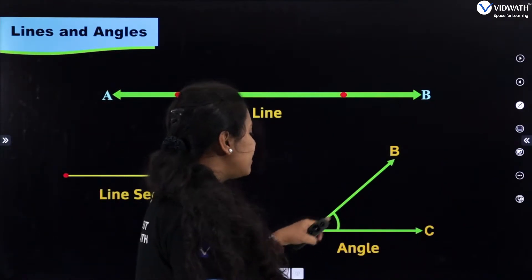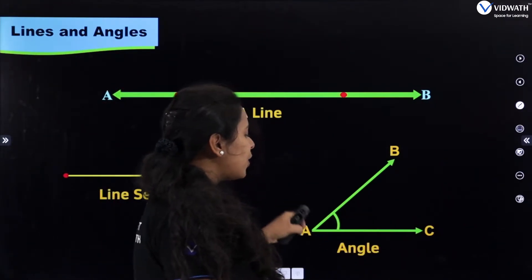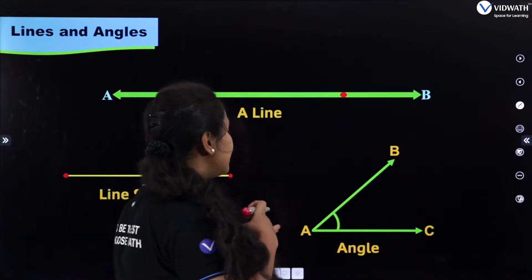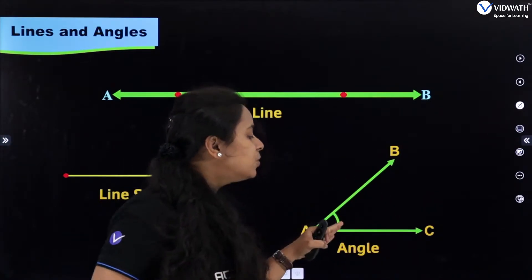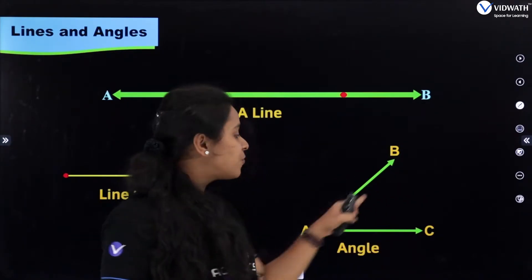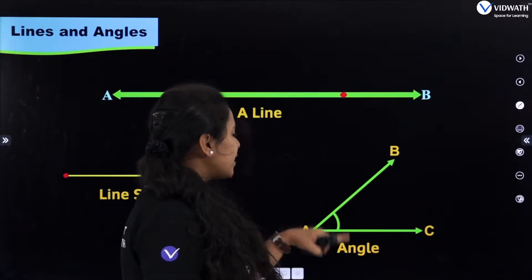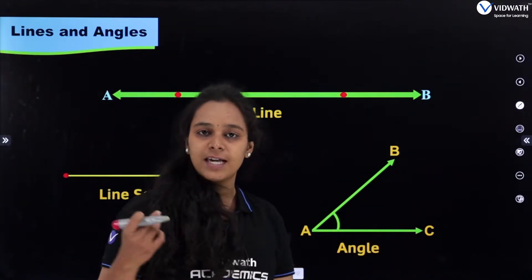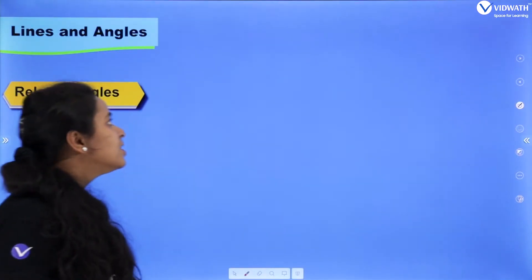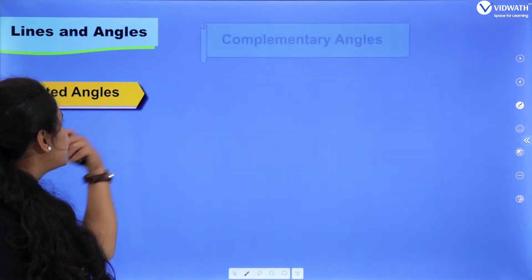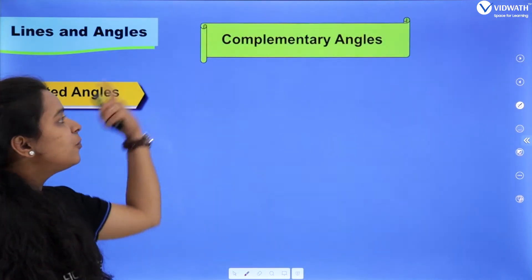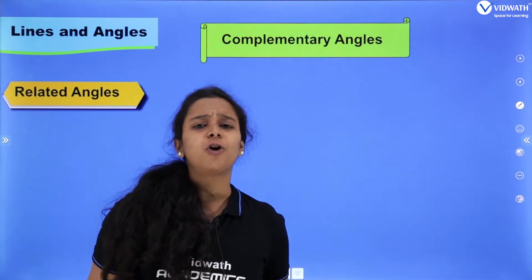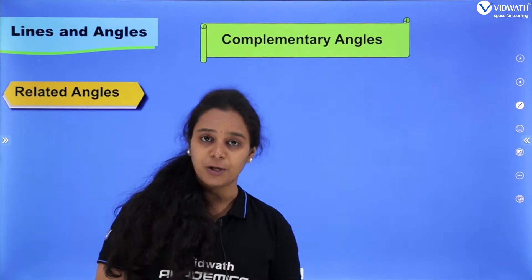The next one is an angle. An angle is formed when two rays meet at a common point. Here, AB and AC are the two rays forming angle BAC.